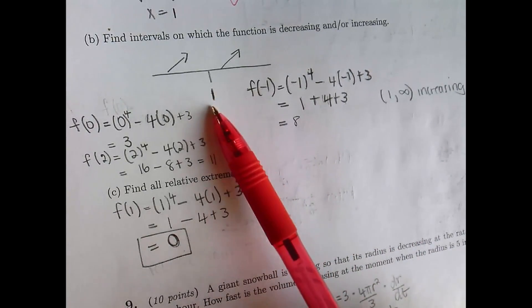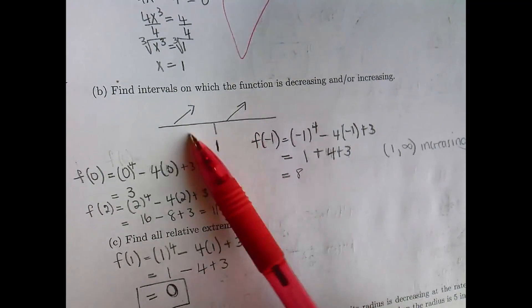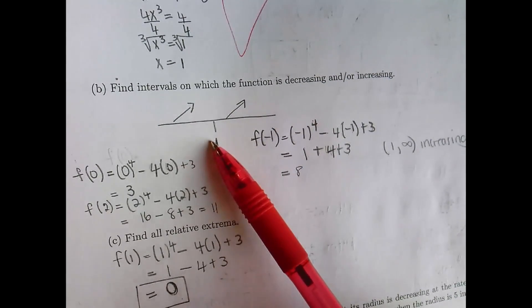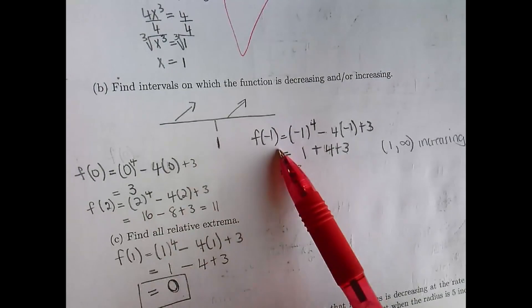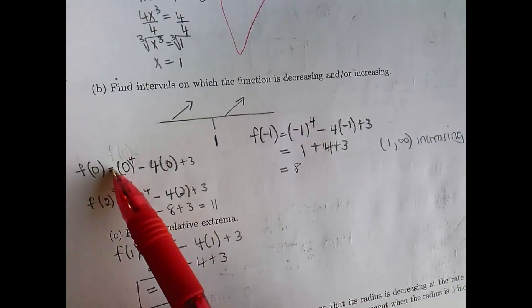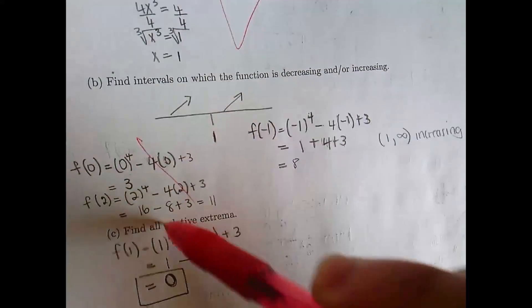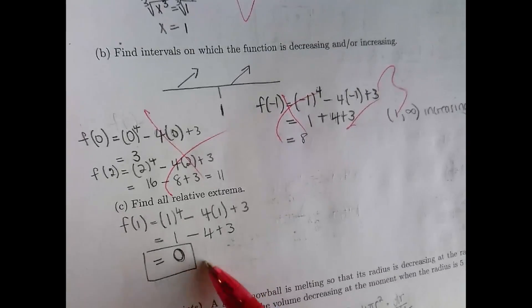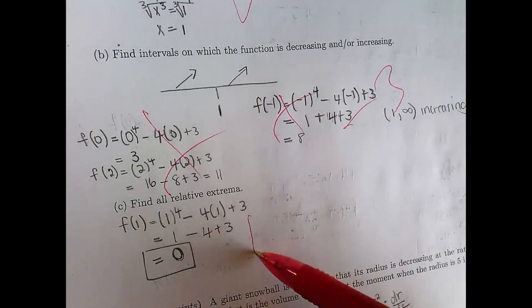This is kind of interesting. They took the critical number and plotted it on the sign diagram. Then you're supposed to plug test points into the first derivative, but this person made a critical error — they plugged the test points into the original function, which is bad. They got lucky and got the answer right — the answer is zero — so good for them.